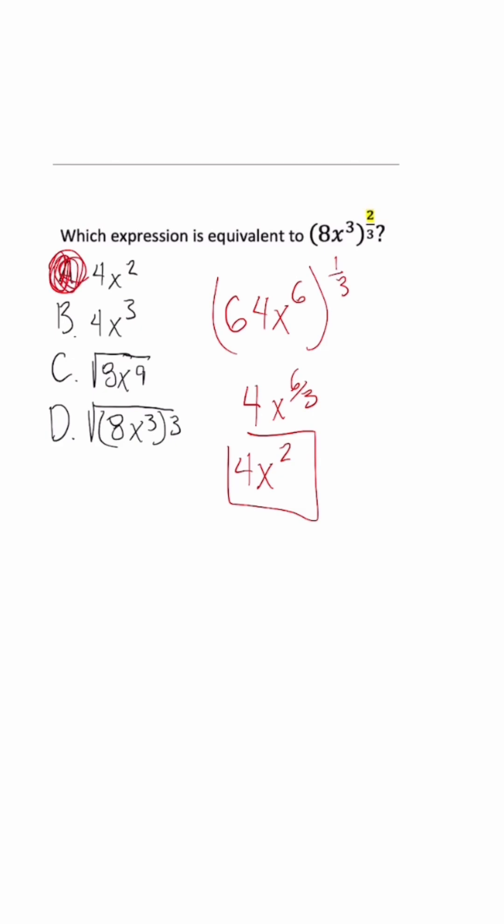Now, another method to do this is let's say we rewrote this as 8x to the third. And what we're going to do here is take this to the one-third power and then square it.